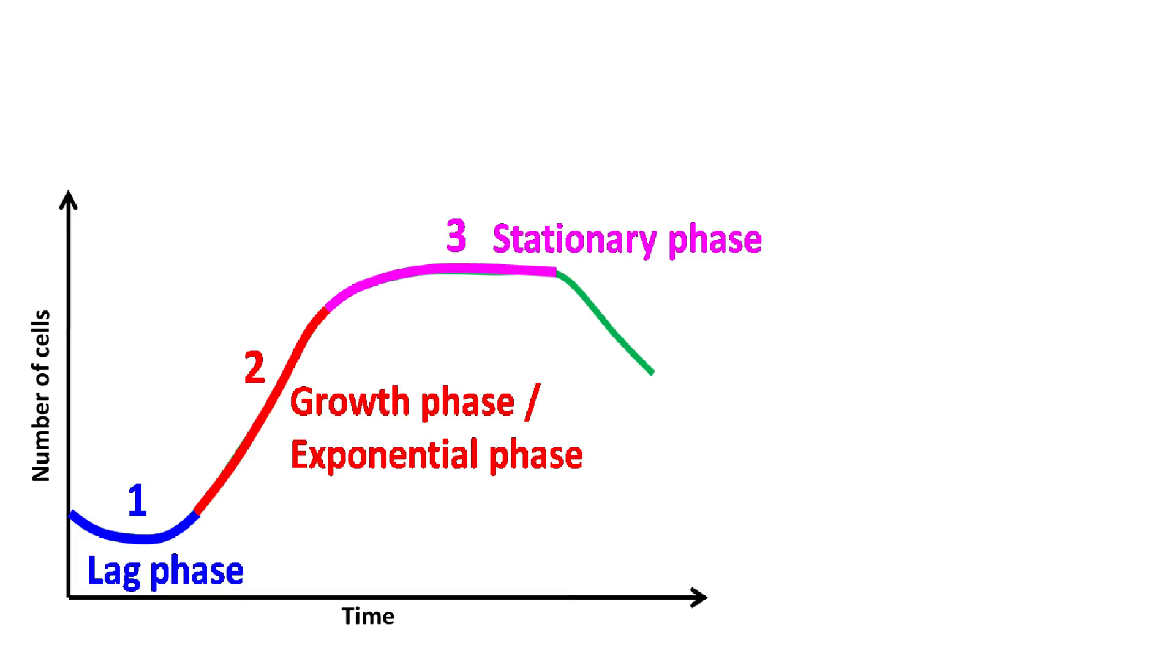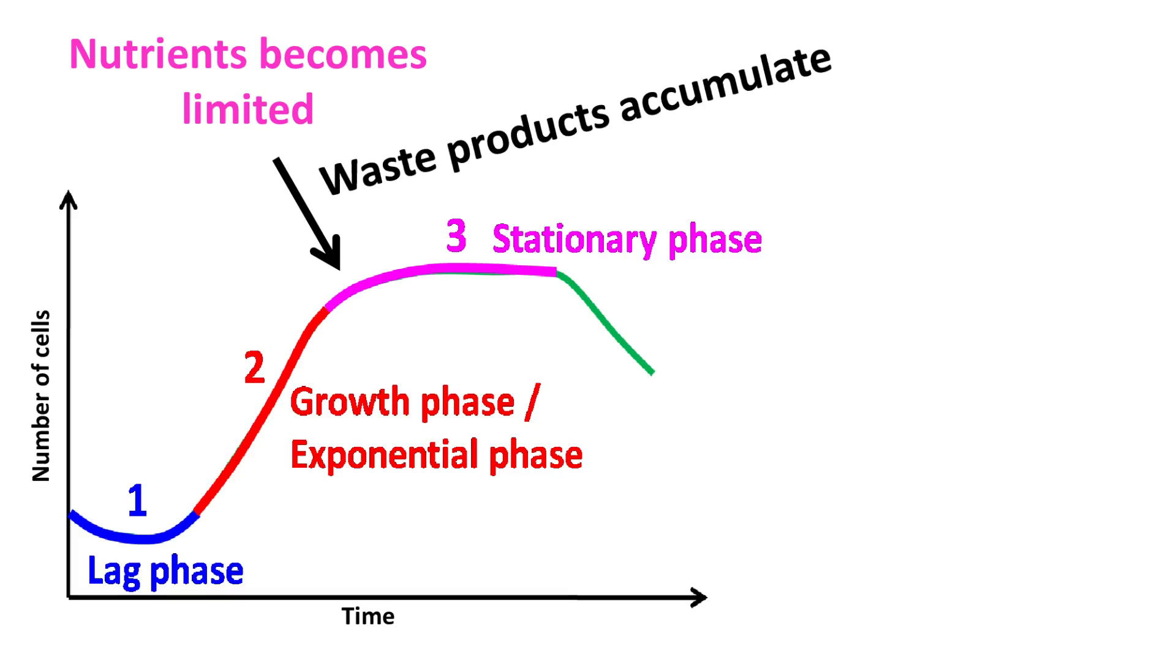Now let's talk about the stationary phase. Due to exponential growth, when the nutrients become limited, the cells stop dividing and enter the stationary phase. Besides depletion of nutrients, accumulation of waste products, lack of oxygen, unfavorable pH also results in the stationary phase.